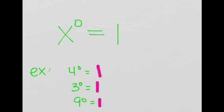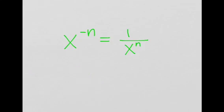Now let's move on to negative exponents. Our rule here is x to the power of negative n is equal to 1 over x to the power of n. Basically it's a reciprocal of x to the power of n, or a fraction of x to the power of n.